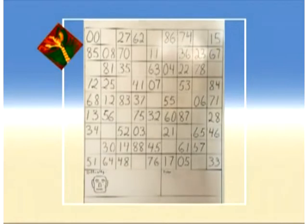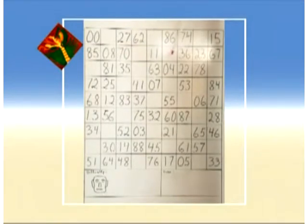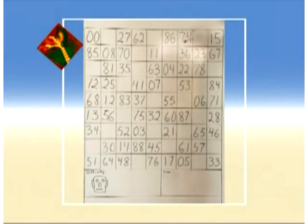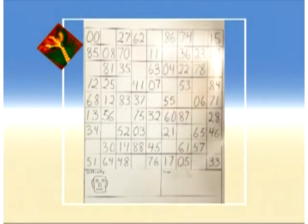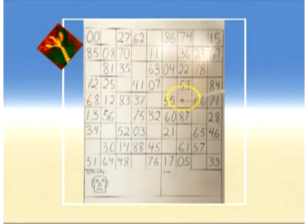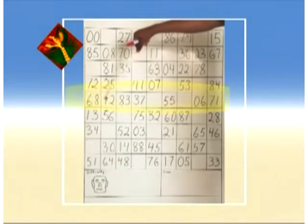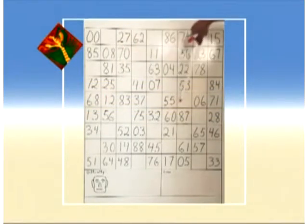For example, this row only has 2 blanks in it, and this column only has 2 blanks in it. Let's start with one of these. We'll start with the left number. From this column we have 7, 3, 2, 5, 8, 6, and 0. We are missing a 1 and a 4. We go across on this row and we see that on the left numbers we have a 1, so a 1 cannot go here, so a 4 must go there.